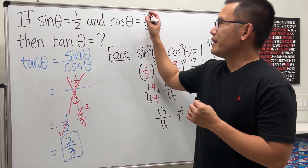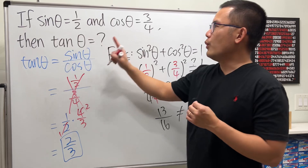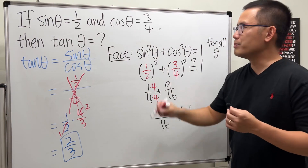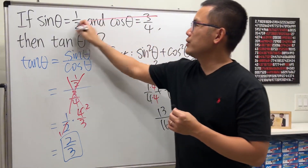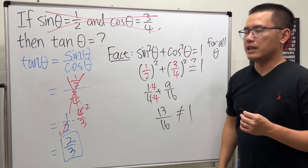So either you fix the sine value or you fix the cosine value — that's up to you. But these two values cannot happen together.